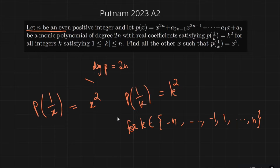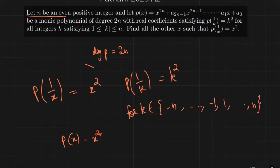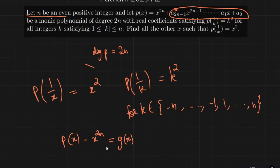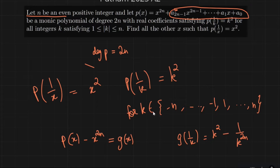Here's how I did the problem. Initially I thought of Lagrange interpolation because we're given a polynomial of degree 2n and we're given its evaluation at 2n points. This is not enough to completely characterize any polynomial of degree 2n, but if I write p(x) minus x^(2n) and set that as g(x), then I can do Lagrange interpolation because I know the evaluation of this polynomial at 2n points — g(1/k) = k² - 1/k^(2n). So I can find g exactly, and then p(x) = g(x) + x^(2n).